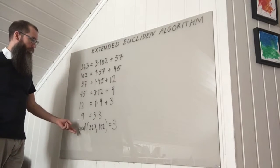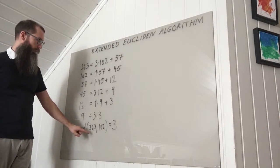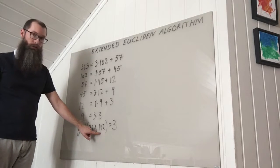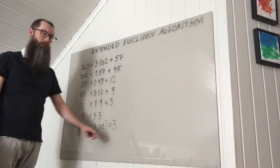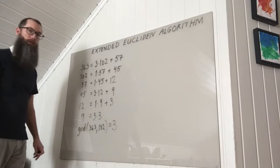This is the Euclidean algorithm where you find the GCD of 363 and 102. So I found that it was 3 through a number of computations.